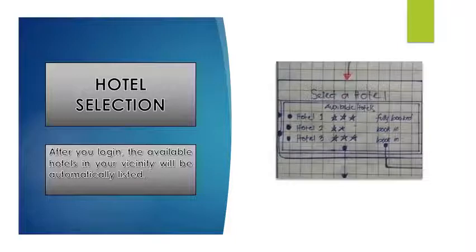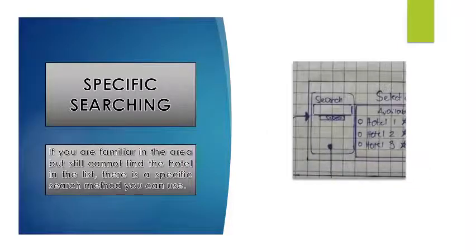Hotel selection: after you log in, the available hotels in your vicinity will be automatically listed. Specific searching: if you are familiar with the area but still cannot find the hotel in the list, there is a specific search method you can use. It can be found in the middle-left section of your screen in the window with the list of hotels displayed.